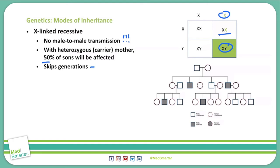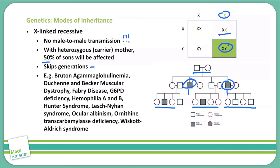Looking at the graph, you see that no one in the parent section is affected, yet they had two affected offspring, both males. Some unaffected offspring will still be carriers. You also see generational skips where unaffected offspring had affected children in the next generation — again, both males. X-linked recessive conditions include Bruton's agammaglobulinemia, Duchenne and Becker's muscular dystrophy, Fabry's disease, G6PD deficiency, hemophilia A and B, Hunter syndrome, Lesch-Nyhan syndrome, ocular albinism, ornithine transcarbamylase deficiency, and Wiskott-Aldrich syndrome.